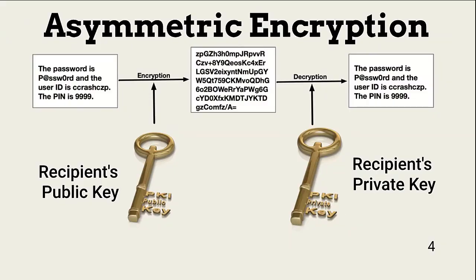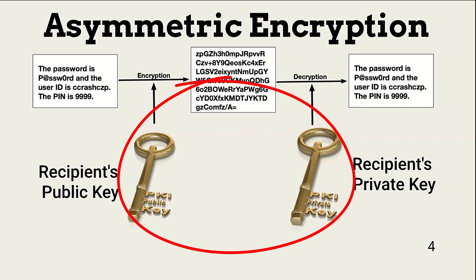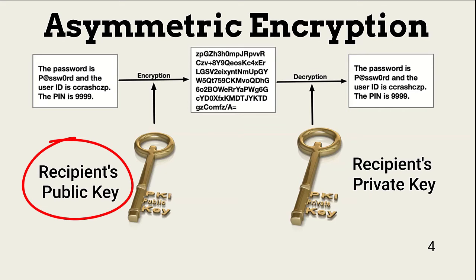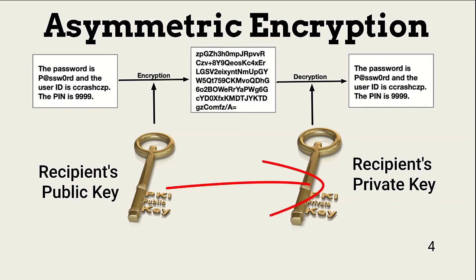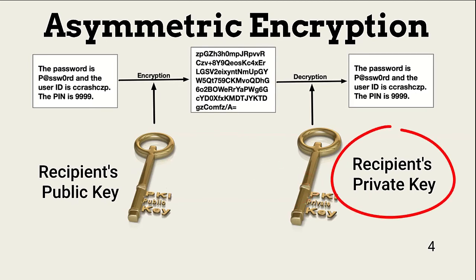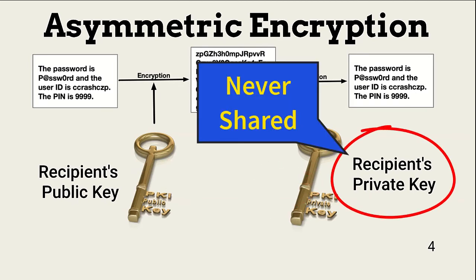Asymmetric encryption methodologies use key pairs. Each entity using asymmetric encryption is issued a public-private key pair. The most common way of doing this across an enterprise is with a public key infrastructure, or PKI. The sender of a file uses the public key of the recipient. Public keys are widely known or kept in a public key directory. The recipient then uses its private key to decrypt the information, and no one other than the recipient should know the private key.